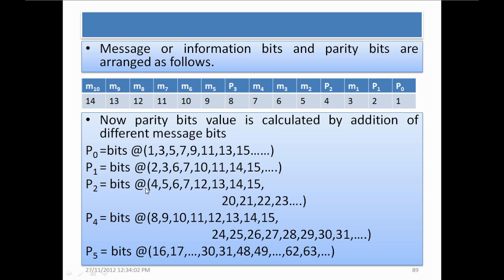For P2, we add 4 bits and skip 4 bits alternately, starting from position 4. Positions 4, 5, 6, 7 are added; 8, 9, 10, 11 are skipped; 12, 13, 14, 15 are added; then 16, 17, 18, 19 are skipped; and so on. Note that bits before the parity bit's own position are not considered.